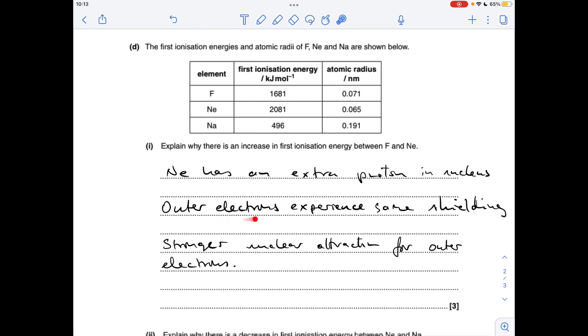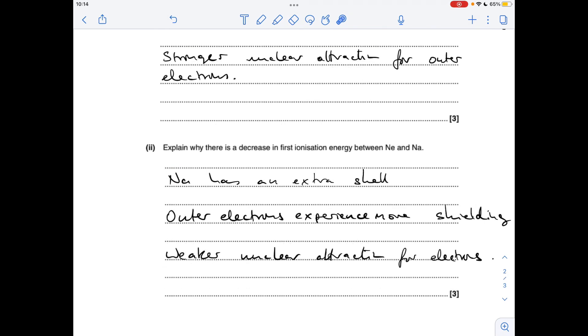Its outer electrons experience the same level of shielding because they've got the same number of shells, and so therefore there's a stronger nuclear attraction for the outer electrons in the neon. And then for the last part we're going to explain the difference between neon and sodium.